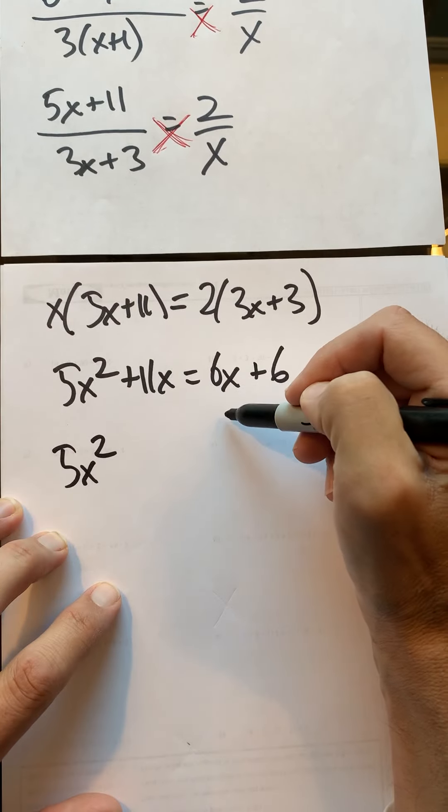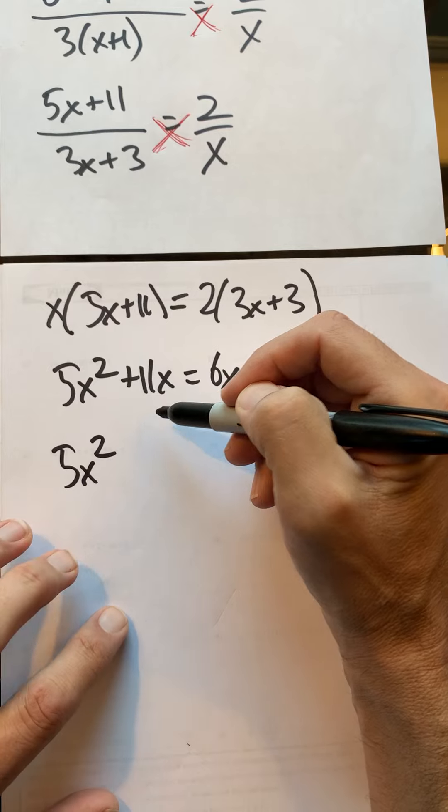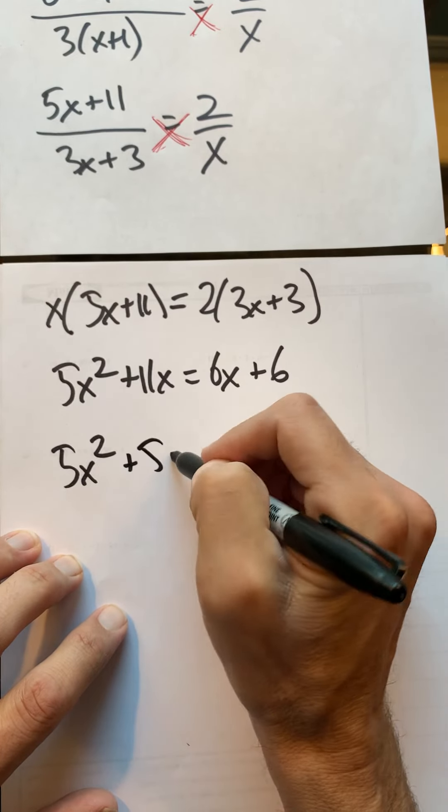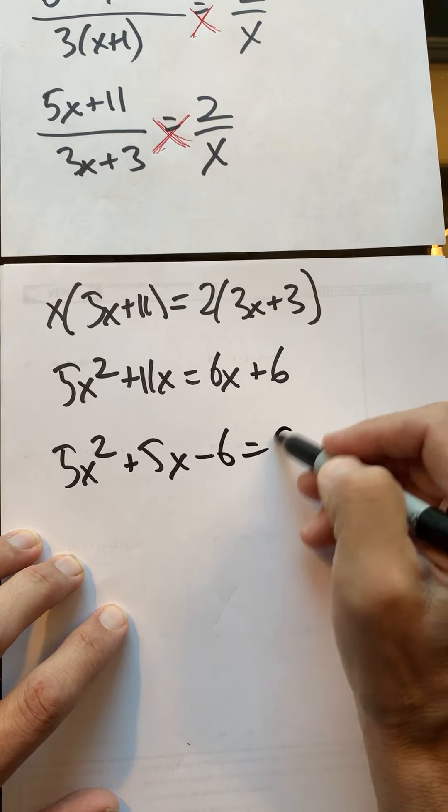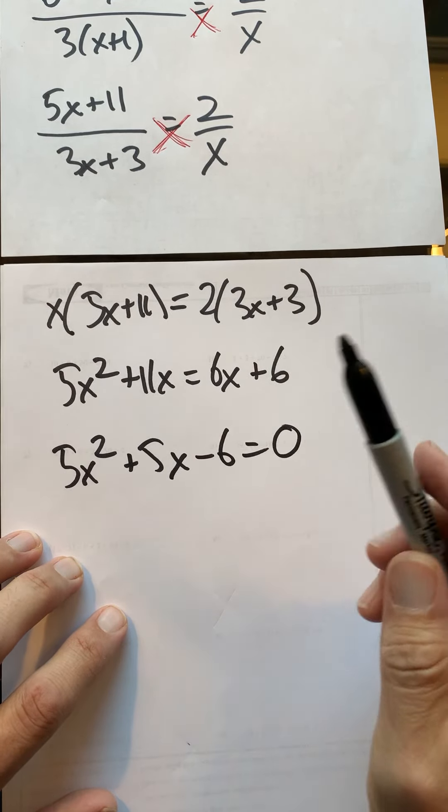I'll put my terms together, so I have 5x². 11 take away 6 is +5x, and I'll bring this 6 over, it becomes -6 = 0. That's my quadratic.